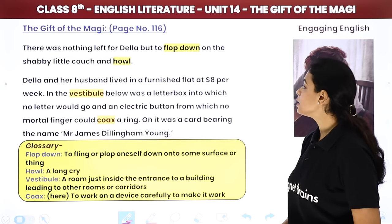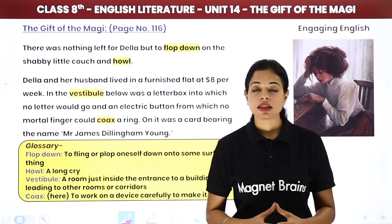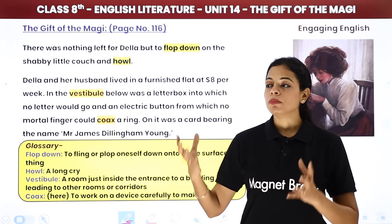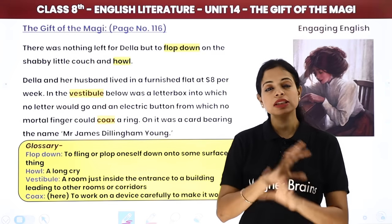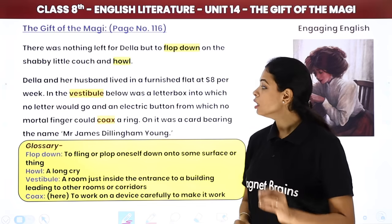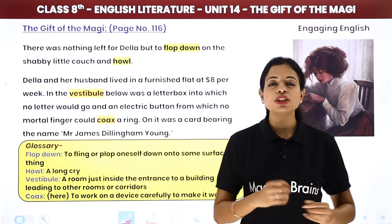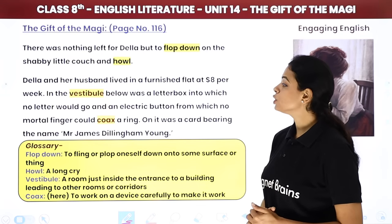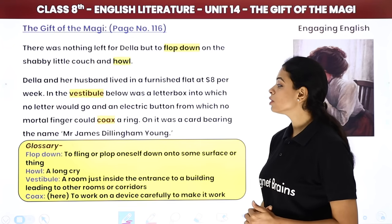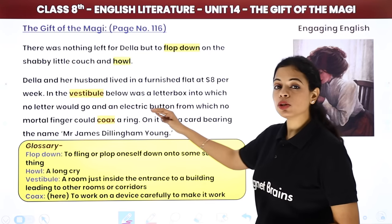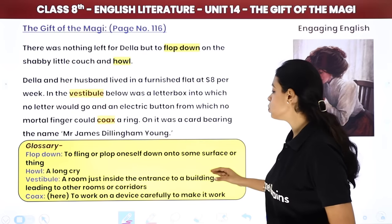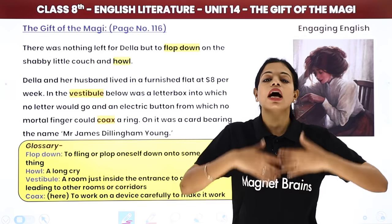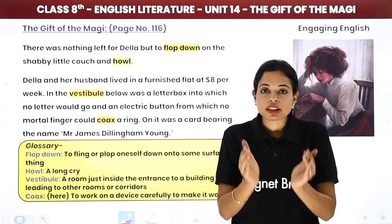Della and her husband lived in a furnished flat at eight dollars per week. Furnished flat matlab jisme poora furniture, sab kuch - almari, couch, refrigerator, television - sab kuch already usme hota hai. But eight dollars is a very small amount, so it was minimum furnishing. In the vestibule below - vestibule matlab a room just inside the entrance to a building leading to other rooms or corridors - there was a letter box into which no letter would go, and an electric button from which no mortal finger could coax a ring.